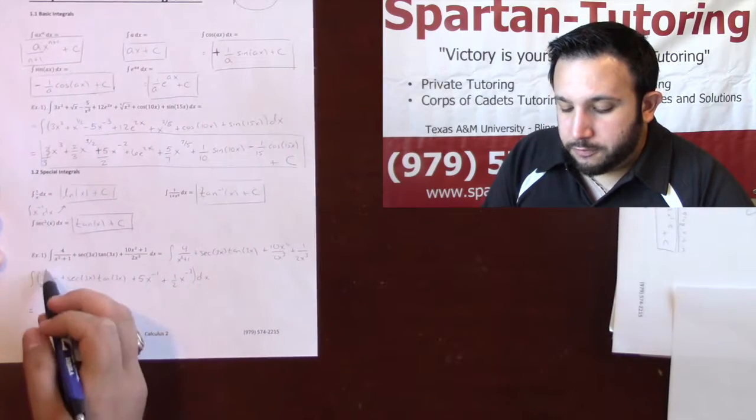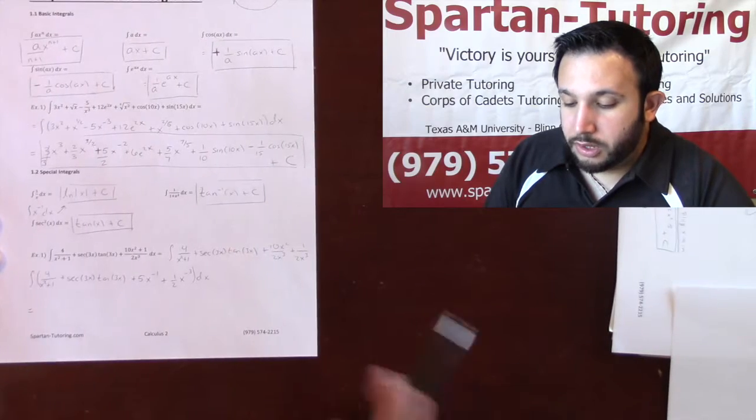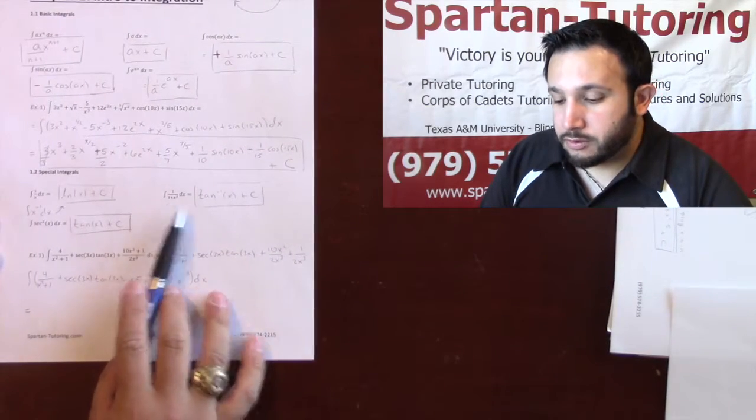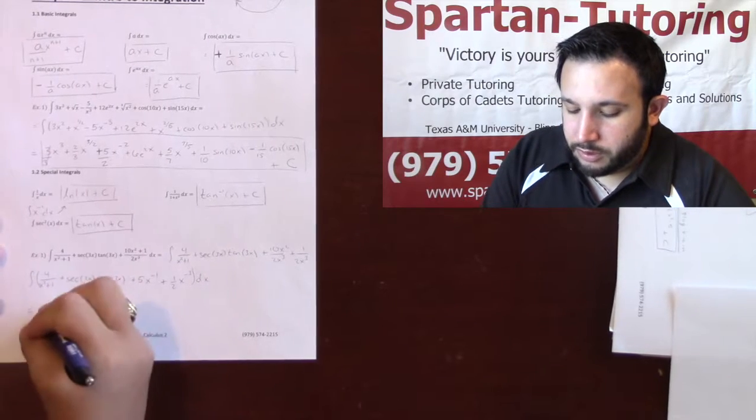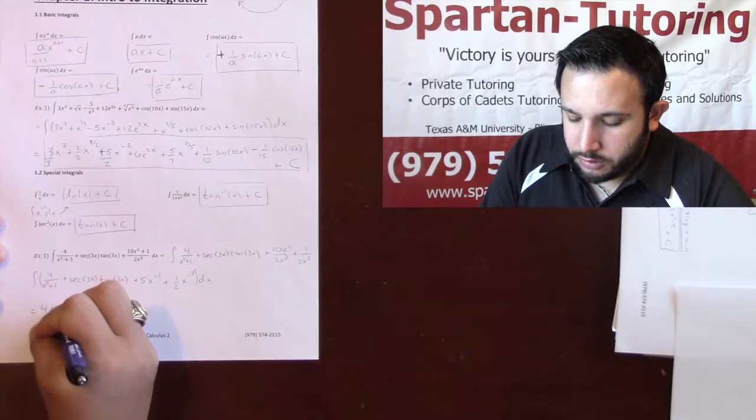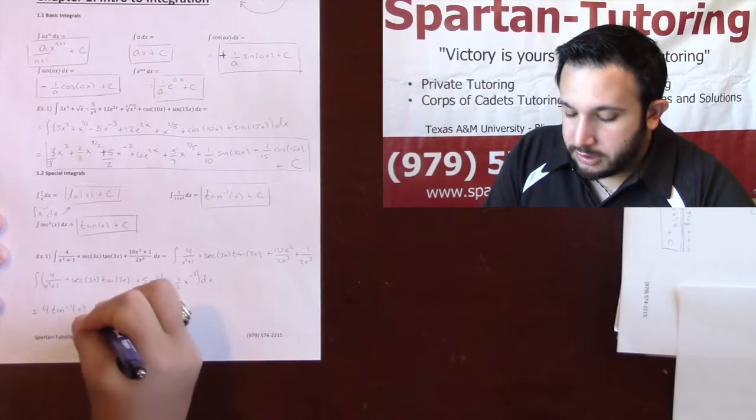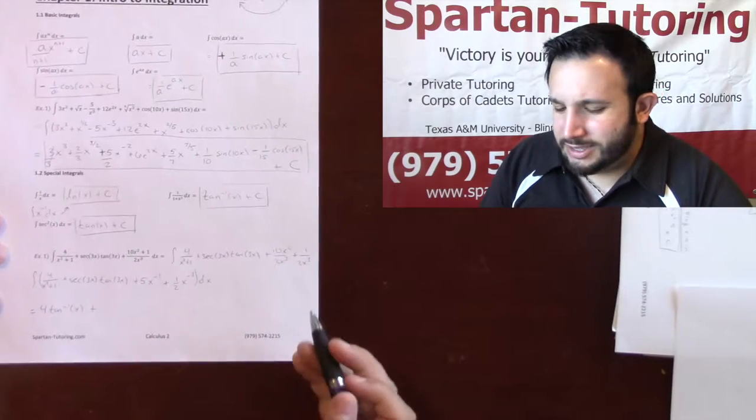And now, now that everything's simplified, now let's integrate. All right. So the integral of 4 over x squared plus 1. Well, I know that the integral of 1 over x squared plus 1, I remember that that's arctangent. And so 4 over x squared plus 1 would just be 4 times the arctangent of x.